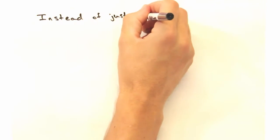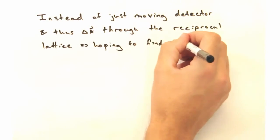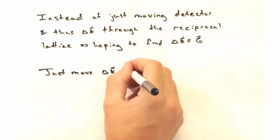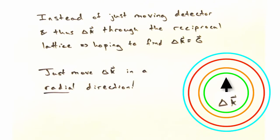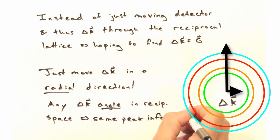So instead of moving the detector, and thus delta k, through the reciprocal lattice, hoping to find a delta k equals G condition, all we need to do is move delta k in a radial direction, since at any angle, we should get the same peak information.